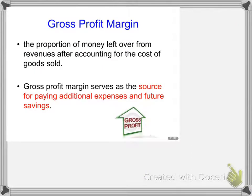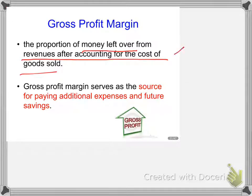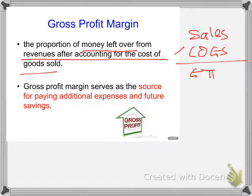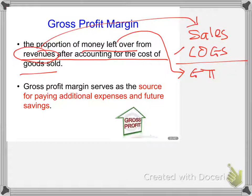We will go through one by one. We will go to gross profit margin. Basically, they are looking at the money that is left over from the revenue after accounting for the cost of goods sold. It means that your sales minus cost of goods sold gives you your gross profit — so the gross profit is the money left over from revenue after minus the cost of goods sold.